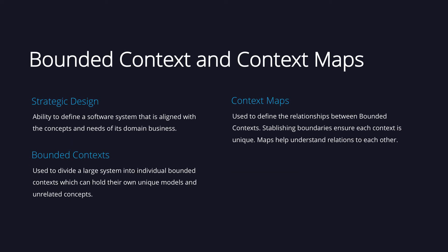Strategic design is at the core of domain driven design and refers to the ability of defining a software system that is aligned with the concepts and needs of its domain business. In large software systems, it is difficult to define a unique model that is going to represent the full picture of a core domain. That is why bounded contexts are used — they divide a large system into individual bounded contexts. Context maps are used to define the relationships between these bounded contexts.